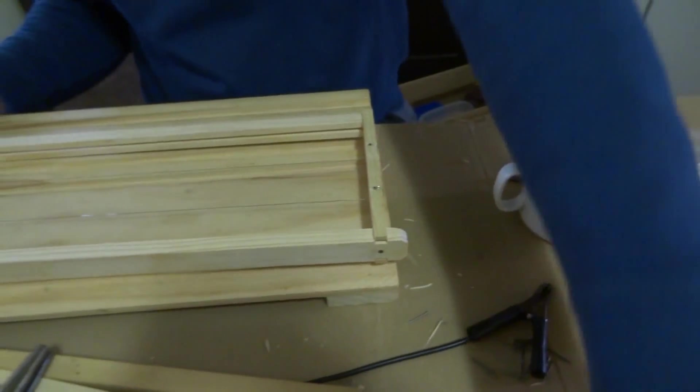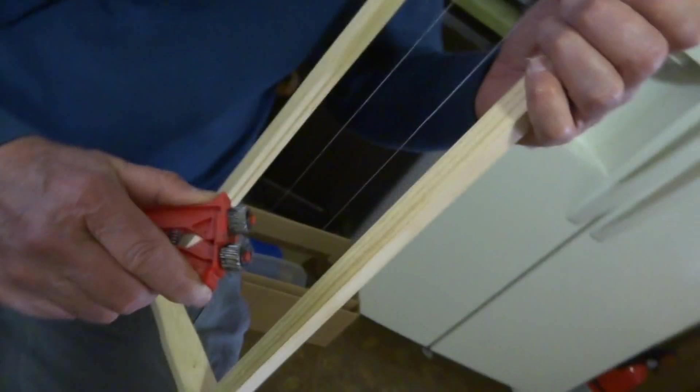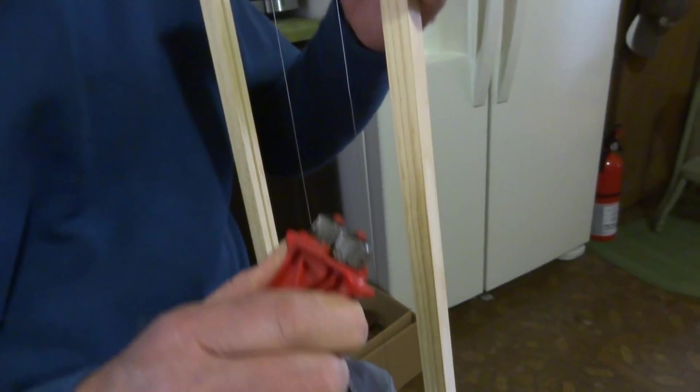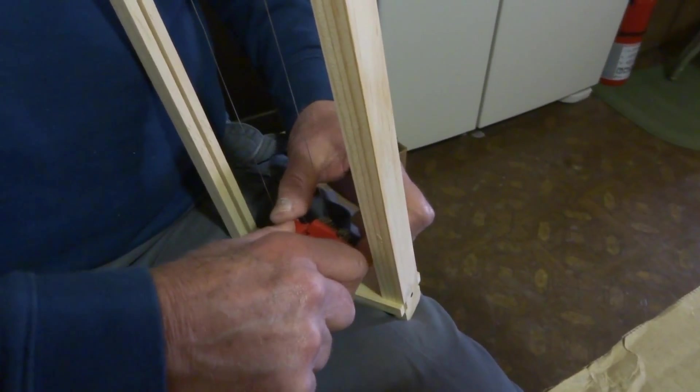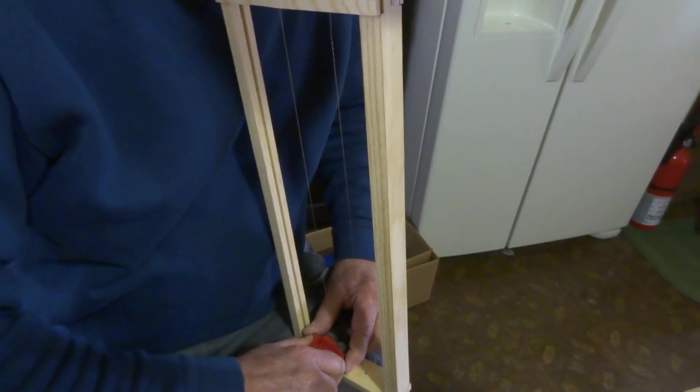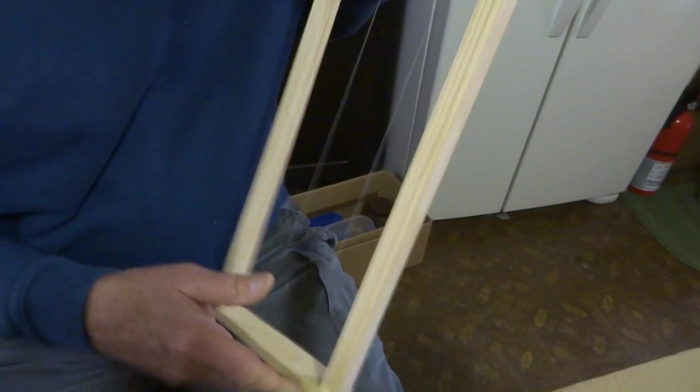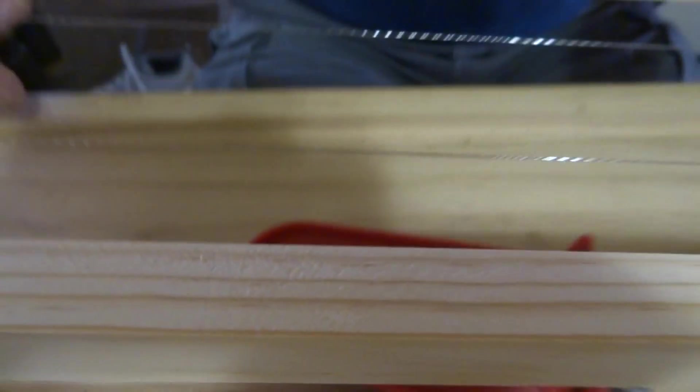And then we're going to tighten it with our crimping tool. Basically, this crimper is just two rollers with notches in it. Just put it at a slight angle, up and down, up and down. And it puts a ridge all along here, and it also tightens up the wire.